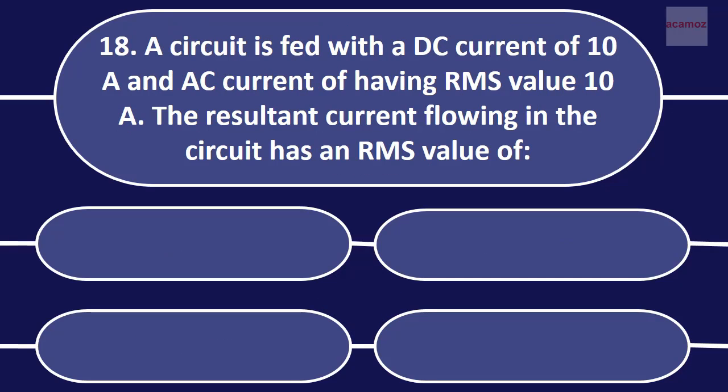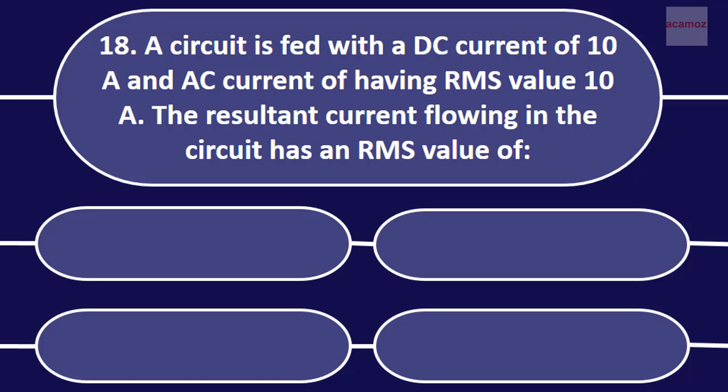The circuit is filled with a DC current of 10 ampere and AC current of having RMS value 10 ampere. The resultant current flowing in the circuit has RMS value of.